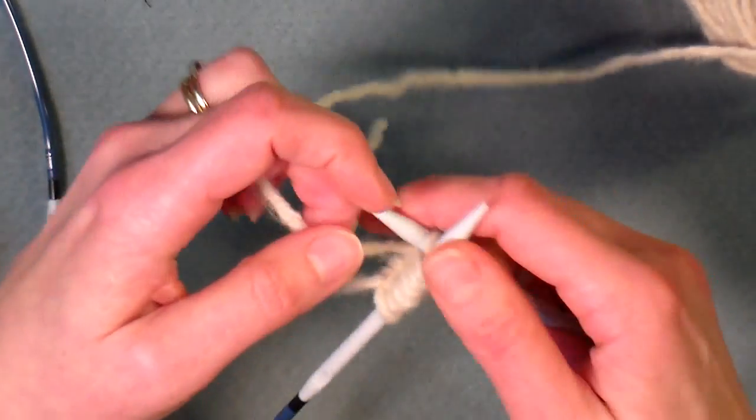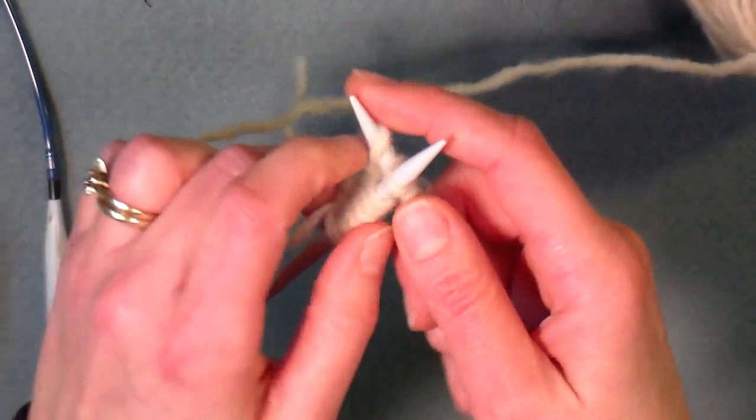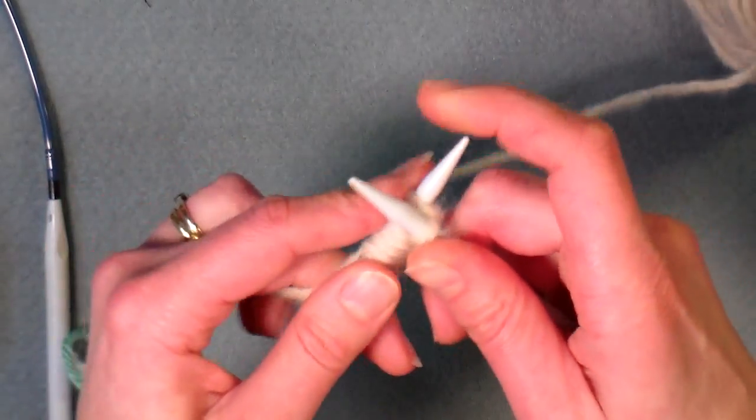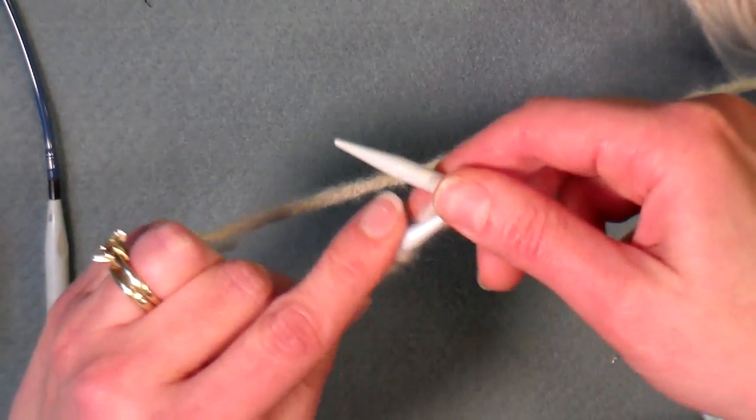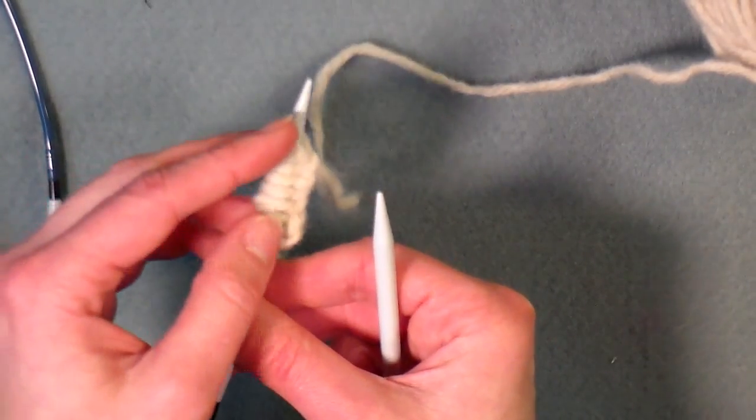Now do this for however many stitches you need in your pattern, whatever it calls for, just cast on that many. This takes a lot longer than the first method I showed you, but it's really essential, you want to take this time when you're doing something you're gonna cable, like a cabled scarf or something, just to give you a nice finished edge.